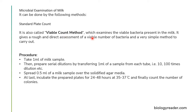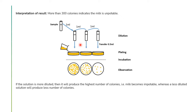The standard plate count gives a rough and direct estimate of the viable number of bacteria and is a simple method to carry out. The procedure is: take 1 ml of milk sample, then prepare serial dilutions by transferring 1 ml of sample to each tube at 10-times and 100-times dilutions. Select the last 3 dilutions and spread 0.5 ml of the milk sample over solidified agar media using a glass spreader. Incubate the prepared plate for 24 to 48 hours at 35 to 37°C, then count the number of colonies.